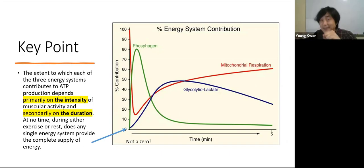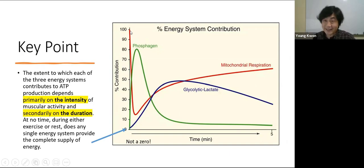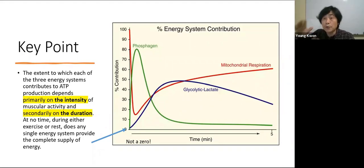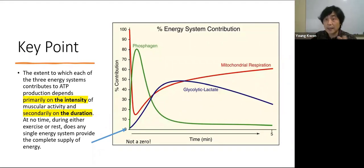Even during a bench press 1RM, all three energy systems are still used — we cannot say only the phosphagen system is active, or only mitochondria, or only glycolysis. All three energy systems contribute to ATP resynthesis regardless of exercise intensity. What changes is the distribution — the relative contribution of each system.